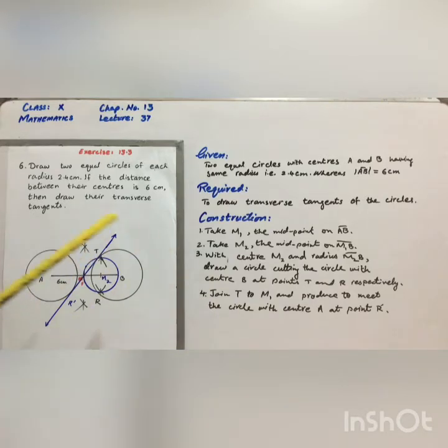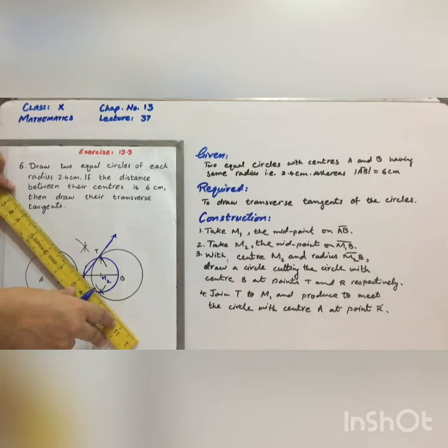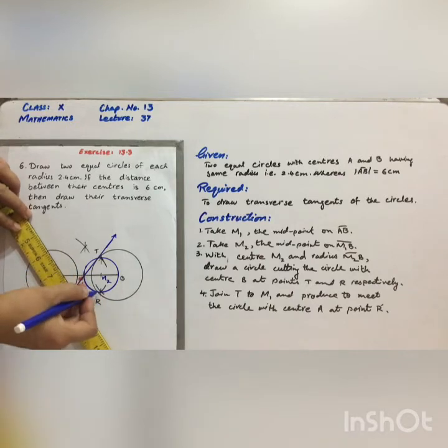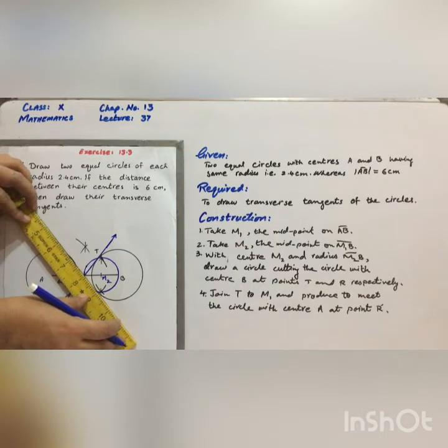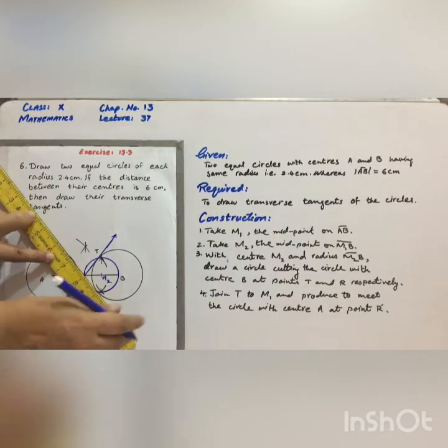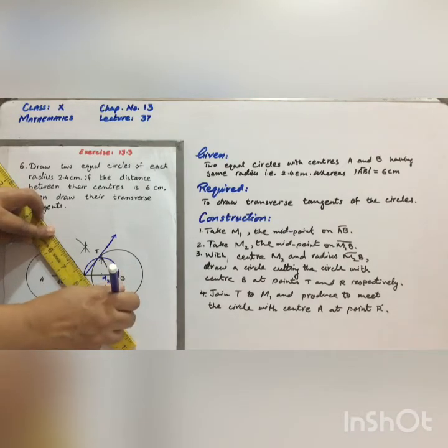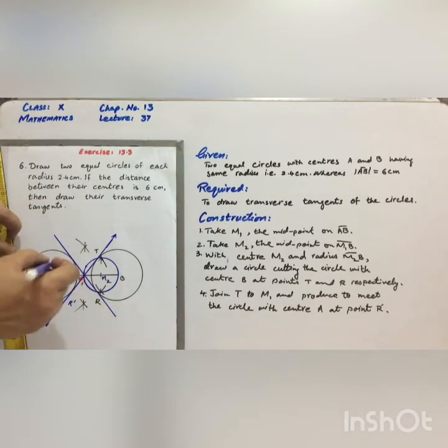Similarly, join point R to M1 and produce to meet the circle with center A at point T complement.